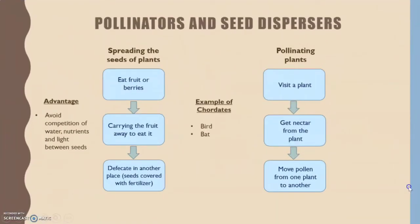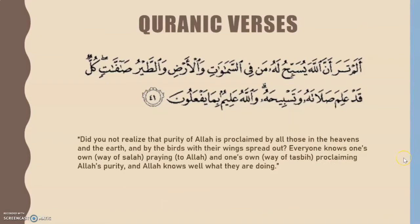For the application of Phylum Chordata in life, we have pollinators and seed dispersers. First, regarding seed dispersal: animals eat fruit or berries and carry them away, depositing seeds in another place covered with fertilizer. The advantage of this process is to avoid competition for water, nutrients, and light between seeds. Second, for pollination: animals visit a plant, get nectar, and move pollen from one plant to another. Examples of chordates involved in this process include birds and bats.